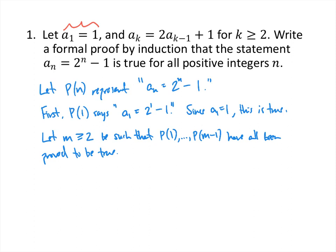Our goal — which we don't write down but think to ourselves — is to prove P of m. Typically there's some way, using all of those already-proved facts, to prove the next one. P of m says that a sub m equals 2 to the m minus 1.